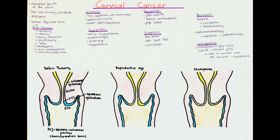Most cervical cancers are of epithelial origin and are due to an infection with the human papilloma virus, or HPV, which is transmitted by sexual contact. An infection with this virus can lead to different histological types of cervical cancer. Histologically, the most common type is the squamous cell carcinoma, which makes up around 75%, followed by adenocarcinomas and mixed adenosquamous forms.